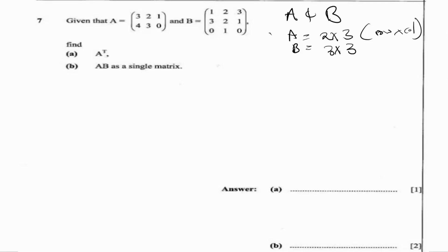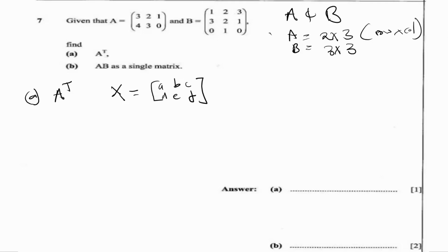The first question asks us to find the transpose of A. Before we answer that, we can simplify by defining a general matrix. Let's define a general matrix X with entries A, B, C, D, E, F — so it's a 2 by 3 matrix. To get the transpose, we're changing the dimensions of this matrix; it should become a 3 by 2.